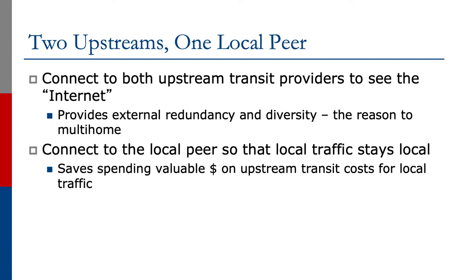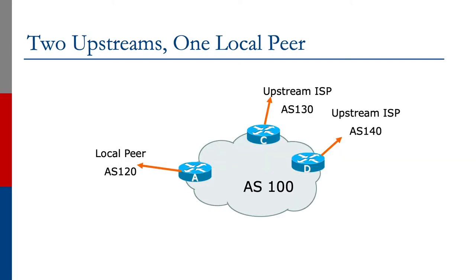Let's look at the diagram. We now have AS100 connecting to AS120, the local peer, and connecting to two upstreams, AS130 and AS140. Notice we have three external-facing routers. Remember, the peering router should not be carrying the default route or the full BGP table, so we don't want to connect the local peer to the same router we connect an upstream provider to. Notice we keep the upstream provider routers separate as well.